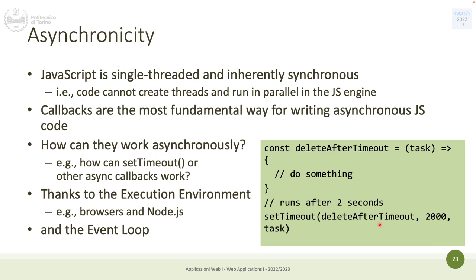This is asynchronous because the program runs its own business and after two seconds something happens that was programmed earlier. But since JavaScript is single-threaded, this isn't another thread — so how is asynchronicity possible? The answer is not hardware interrupts but the execution environment, and a concept called the event loop.